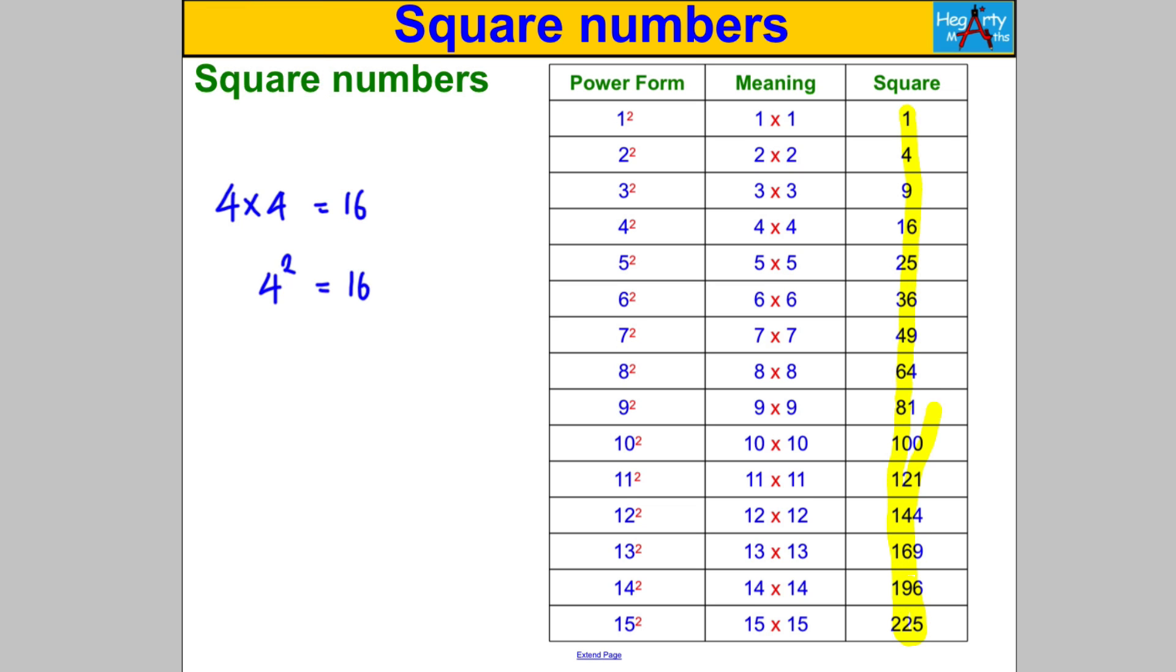We need to know all the squares from 1 squared up to 15 squared. These are all our square numbers. They are the result of taking a whole number and multiplying it by itself. For example, 144 is square because 12 multiplied by 12 is 144, and 225 is square because 15 multiplied by 15 is 225. We should know all the squares from 1 up to 225, so there are 15 different ones to remember. Luckily up to 12 squared all of these are in our times table, so there's only 3 extra ones: 169, 196 and 225.